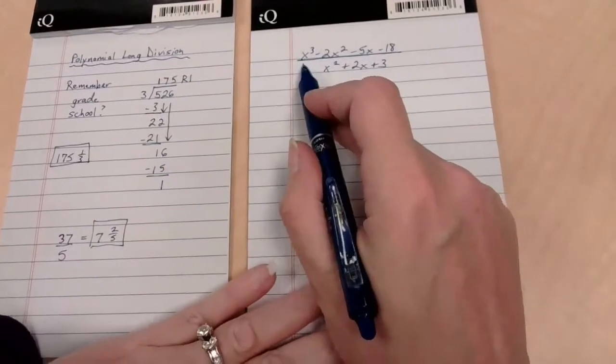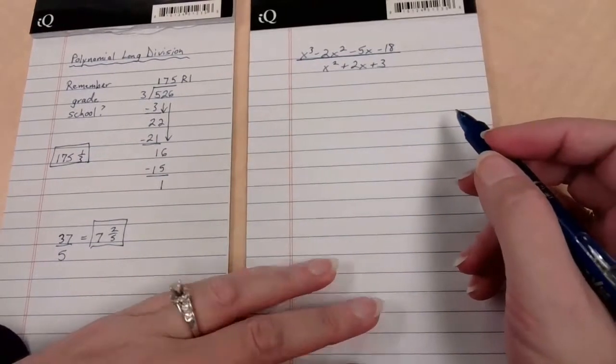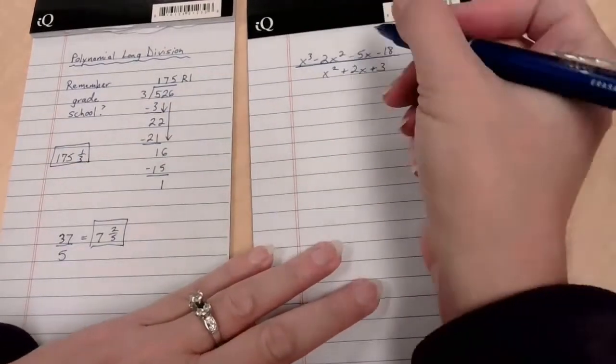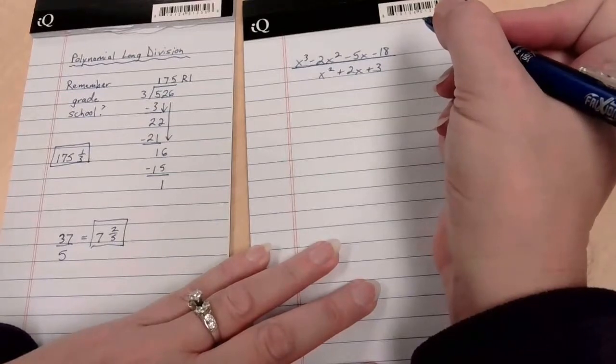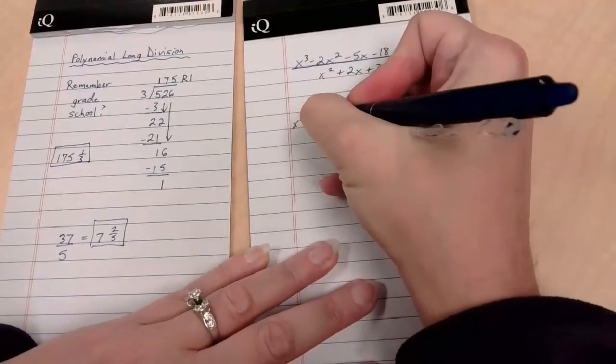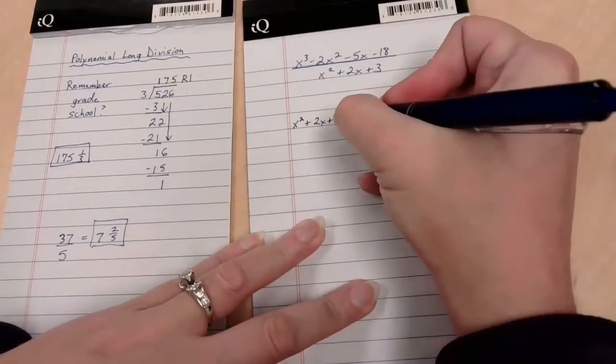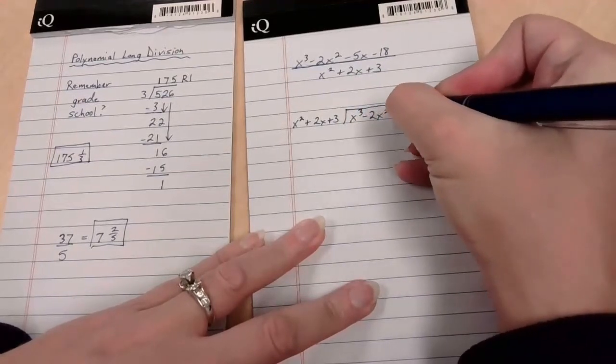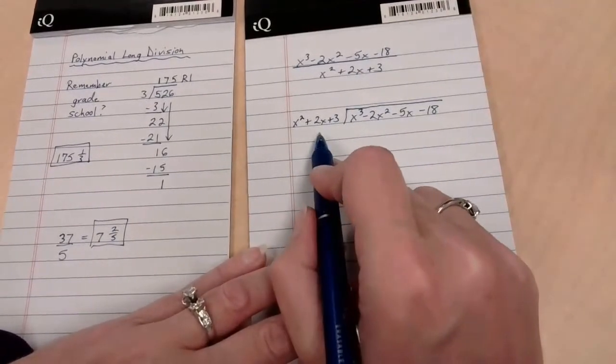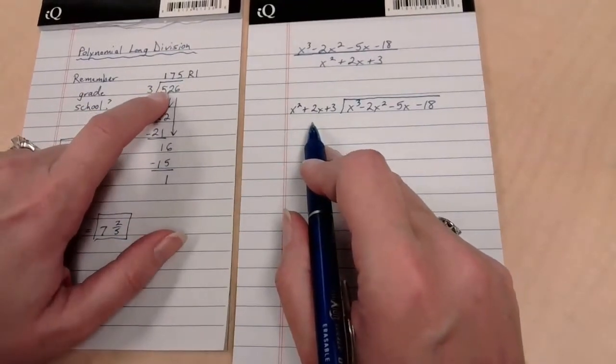5 goes into 37, 7 times, because 7 times 5 is 35, with a remainder of 2, and so we would write 2 fifths. So this process of long division is what we're going to try to recreate on a slightly modified level for polynomials. So what if we have x³ minus 2x² minus 5x minus 18, and we're trying to divide by x² plus 2x plus 3. Let's set it up like this one, shall we?